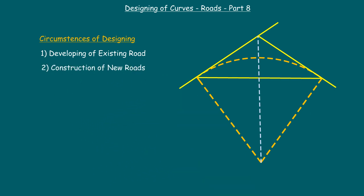In both cases we need some information from the site. We have to observe the field data as much as possible. At least we need a minimum of two measurements from the site to design accurately. At any circumstances we must know the most accurate deflection angle at the point of intersection, because without the deflection angle we cannot design the curve.